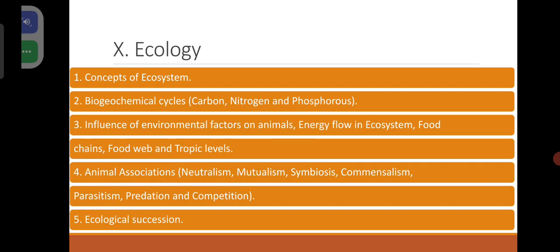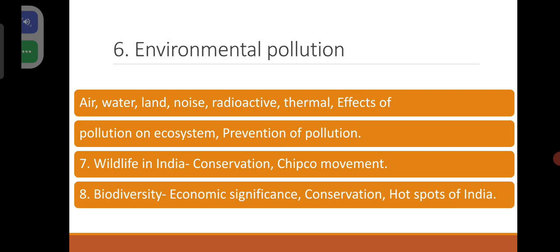Coming to ecology — it is very crucial and easy to understand, but there is much scope for confusion. Concepts of ecosystem, biogeochemical cycles like carbon, nitrogen and phosphorus, influence of environmental factors on animals, energy flow in ecosystem, food chains, food web and trophic levels. Animal associations like neutralism, mutualism, symbiosis, commensalism, parasitism, predation and competition. Ecological succession. Environmental pollution — very important in view of current affairs also: air, water, land, noise, radioactive, thermal pollution, their effects on ecosystem, and prevention. Wildlife in India, conservation, Chipko movement. Biodiversity: economic significance, conservation, hot spots of India.